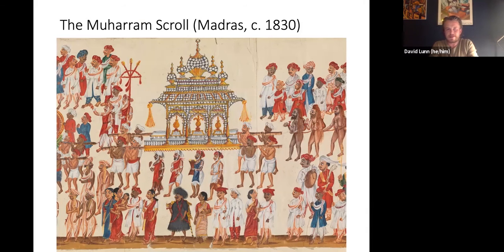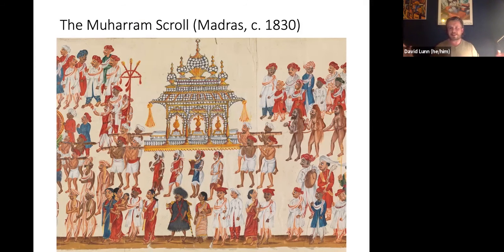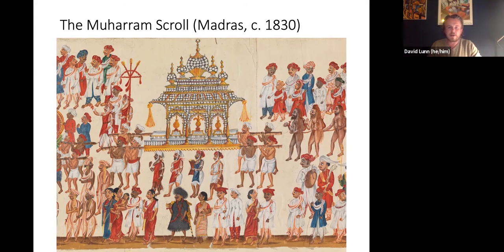I want to focus on a slightly different depiction of Muharram. This is elaborately termed the Muharram scroll, dated to around 1830 or 1840 from Madras — that is to say the Presidency of Madras, the region of East India Company controlled India surrounding modern-day Chennai. This is around a six-metre long scroll showing a continual procession with things we recognise — the depiction of a Tazia — but also things that are not immediately decipherable.